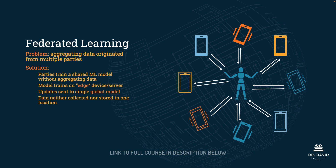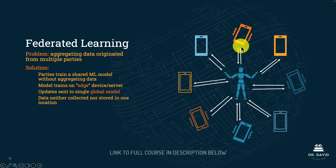Federated learning is a much easier concept to understand. The problem that federated learning solves is that aggregating data from multiple parties increases liability and risk. Imagine taking all the data on 100 million American cell phones and putting that all on one massive server or in one data center and training a model on that — that creates a single point of failure if that data were to be breached. Instead, federated learning allows parties to train a shared model without aggregating the data. We have a global model in the middle that sends a model to each of these edge devices or servers.